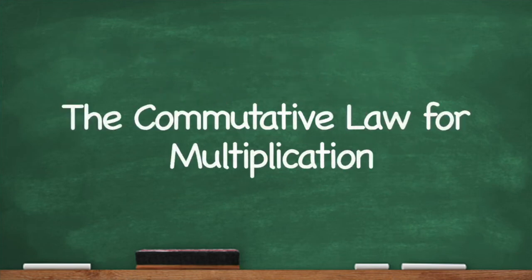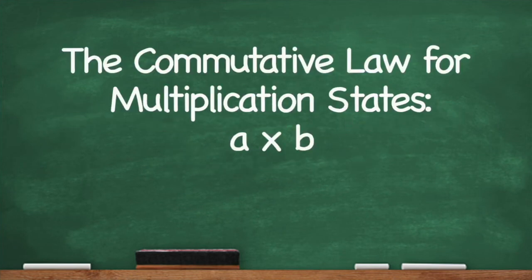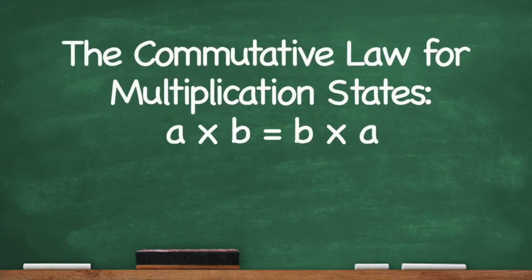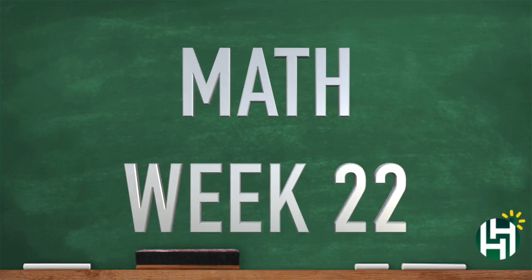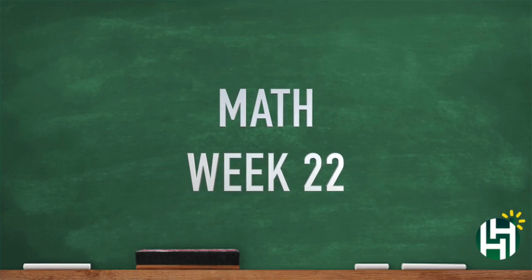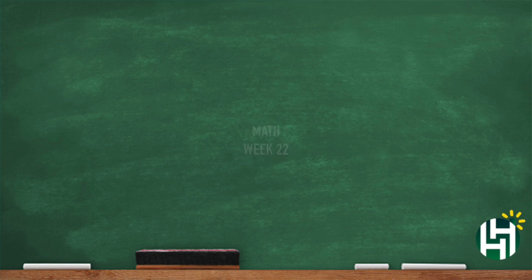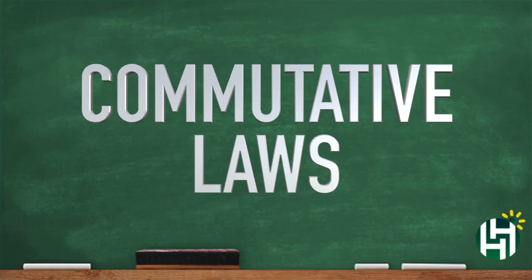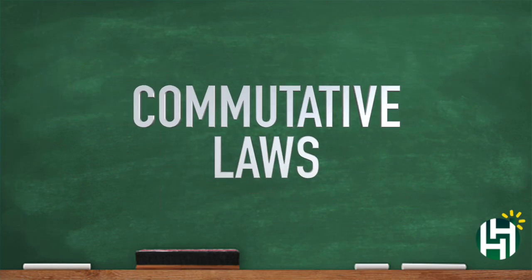The commutative law for multiplication states A times B equals B times A. That was it my friends — math week 22: commutative law for addition and commutative law for multiplication. And now it's time for me to say bye.